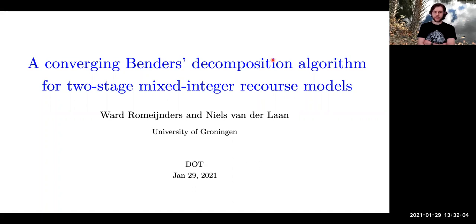He's published in journals like OR, Mathematical Programming, Science Journal of Optimization, EJORS, and Informational Computing. He's won several awards for his research, including the Gies Delev Prize 2015–2017 for the best PhD thesis on the mathematics of OR in the Netherlands. His work has also been supported by the Netherlands Organization for Scientific Research, and we're very happy to have him here today.